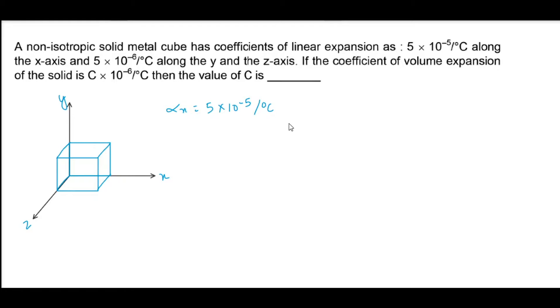And 5 into 10 raise to minus 6 per degree celsius along y and z-axis. So alpha y is equal to alpha z which is 5 into 10 raise to minus 6 per degree celsius.